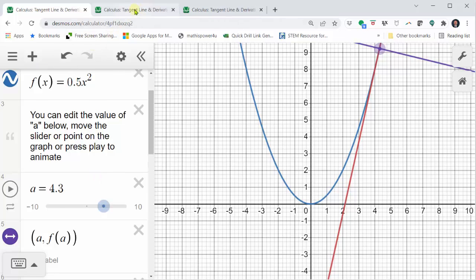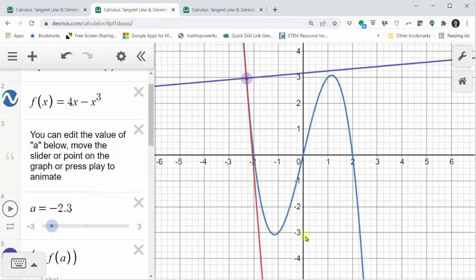Next we have a cubic function. Again the red line is a tangent line. The purple line is a normal line, the line that is always perpendicular to the tangent line and also passing through the point of tangency.